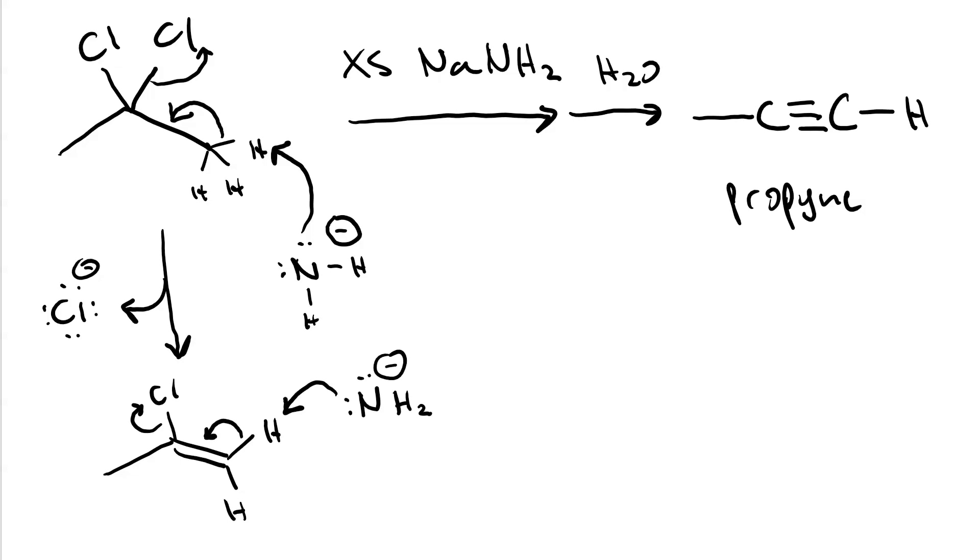We do a second proton transfer and loss of a leaving group to get propyne. Having a third equivalent of amide, because this is an excess, gives us a final proton transfer and allows us to precipitate out all of our reactant as propyanide ion, which pulls the equilibrium all the way to the right, so the reaction gives close to 100% yield.